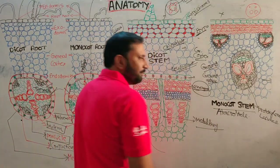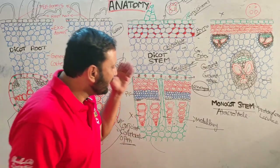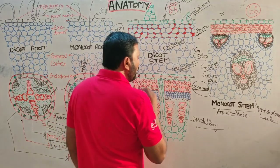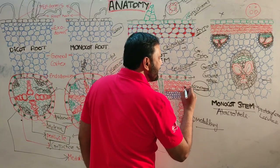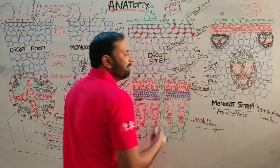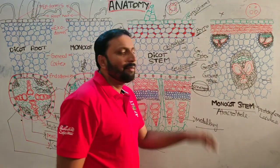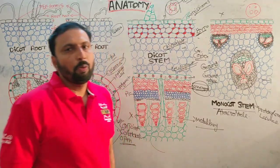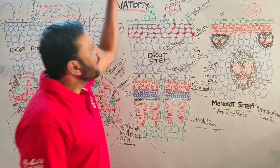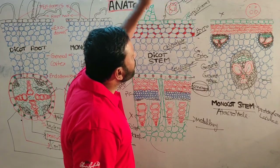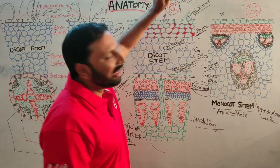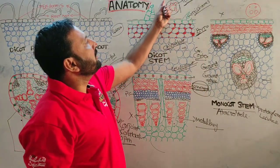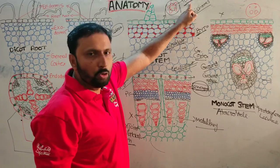The central conducting tissue is called the stele, which is well developed in stems. The outermost layer of the stele is the pericycle, made up of sclerenchyma cells that give mechanical strength. In the dicot stem, 15 to 20 vascular bundles are arranged in the form of a ring — that condition is called eustele.